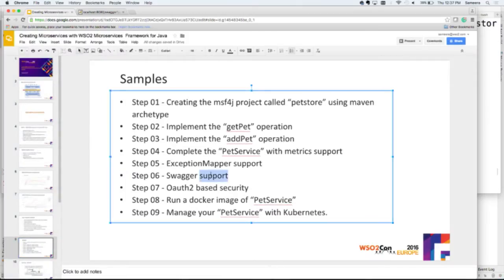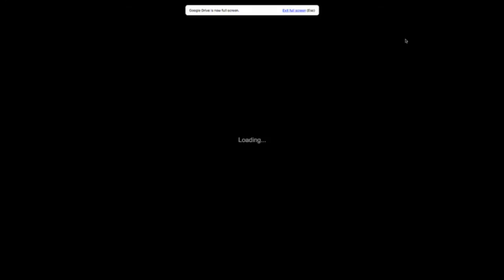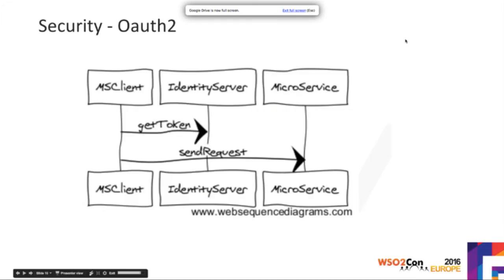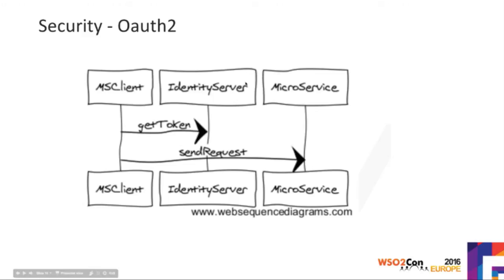The next sample is security. I have a slide explaining the concept: the client has to talk to an identity server and get an access token. Then the client passes the access token to the microservice. There's an interceptor waiting that extracts the token and talks back to the identity server to validate the signature. If the token is valid, it lets you in. This is the idea.